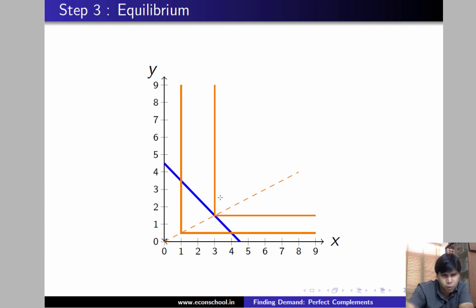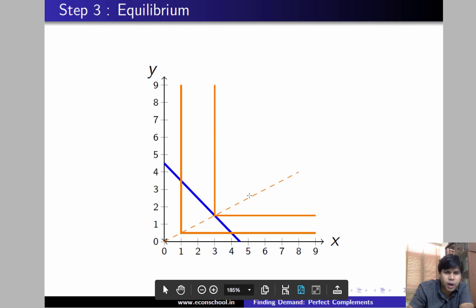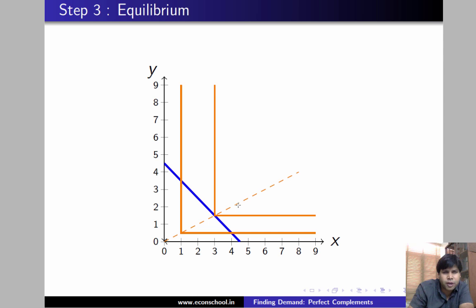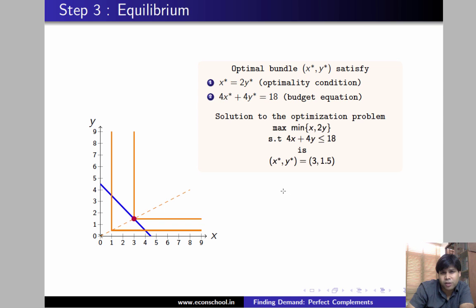What is this bundle? Well, this bundle is x equal to 3 and y equal to 1.5. You can simply find this point by solving the system of equations because this point lies on the budget line and this point also lies on y equal to x by 2. It's just two equations and two unknowns. When you solve for it, you're going to get x equal to 3 and y equal to 1.5. So we get x star, y star equal to 3 comma 1.5 as a solution to the optimization problem. Thank you.